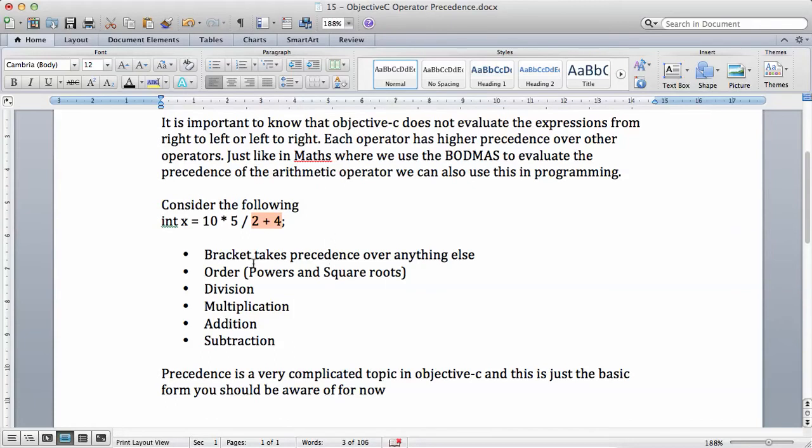And the formula is called BODMAS. This is what I remember from back in school time. The B stands for brackets. So anything that has a bracket, what I'll do is I'll actually put a bracket around the 10 multiplied by 5. Anything that has the bracket around it takes the precedence. That's the first thing that will be evaluated.